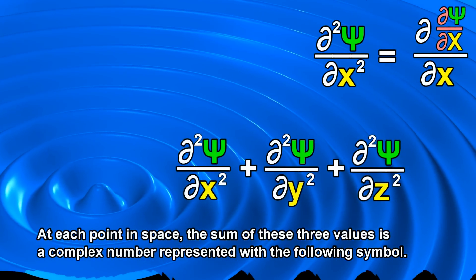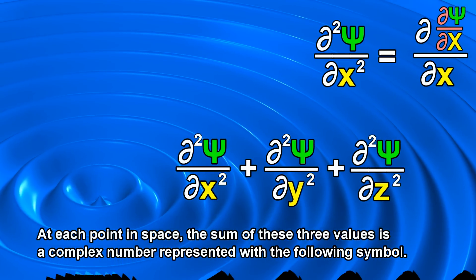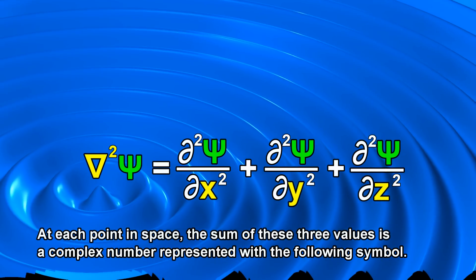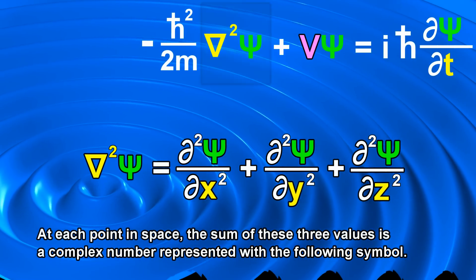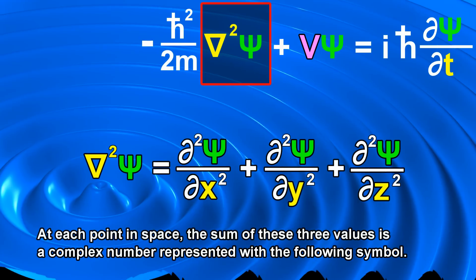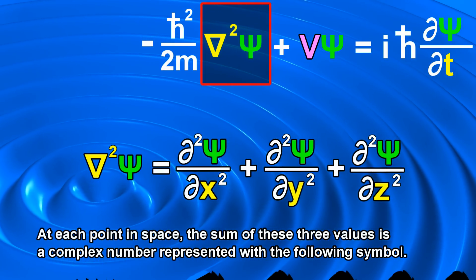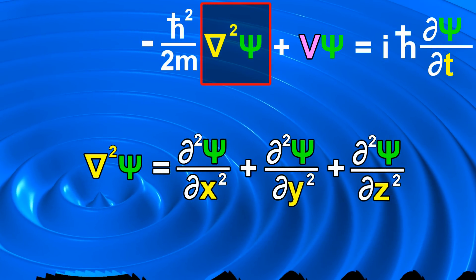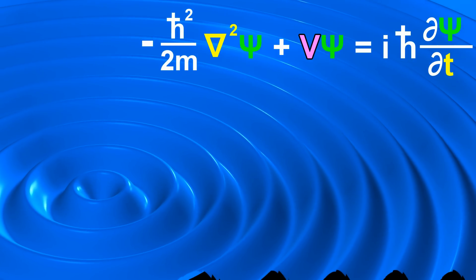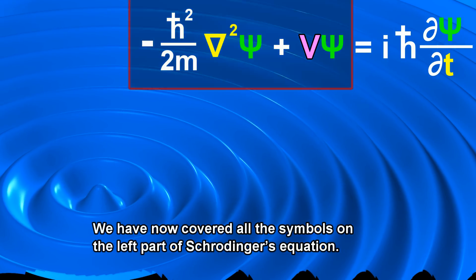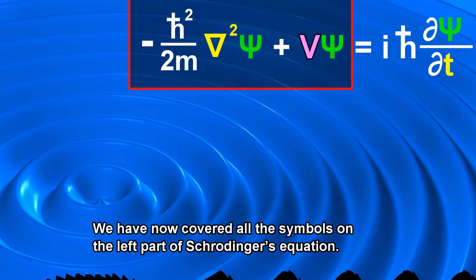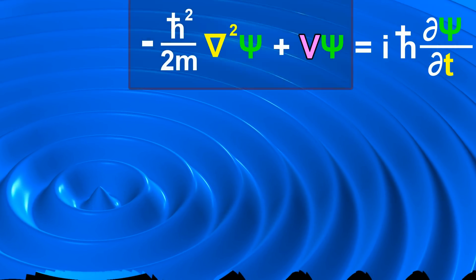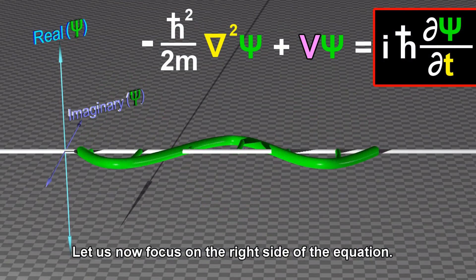At each point in space, the sum of these three values is a complex number represented with the following symbol. We have now covered all the symbols on the left part of Schrödinger's equation. Let us now focus on the right side of the equation.